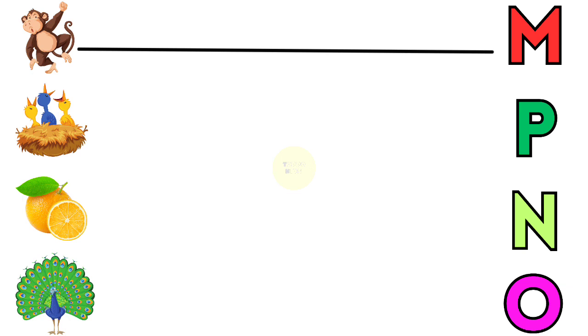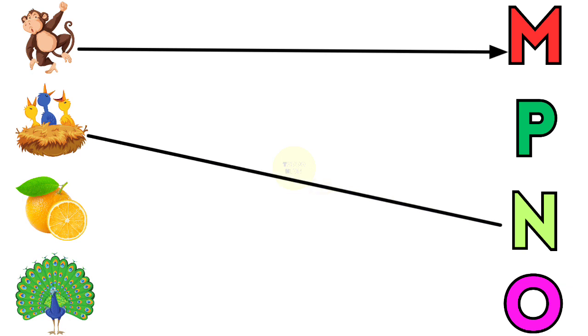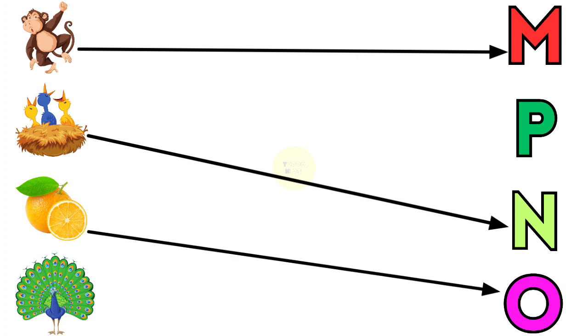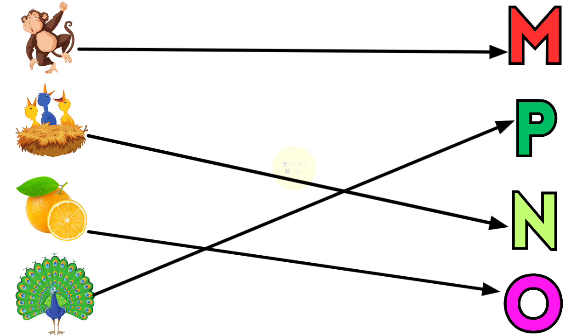M for Monkey, N for Nest, O for Orange, P for Peacock.